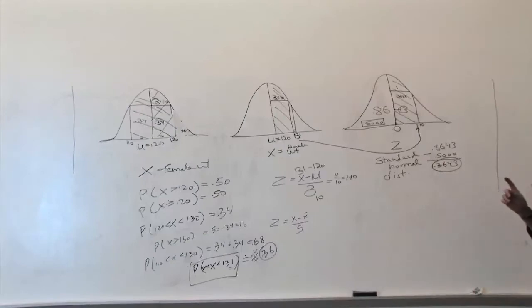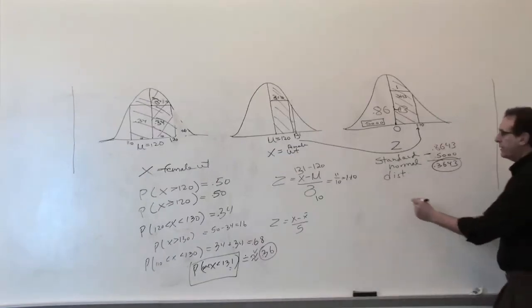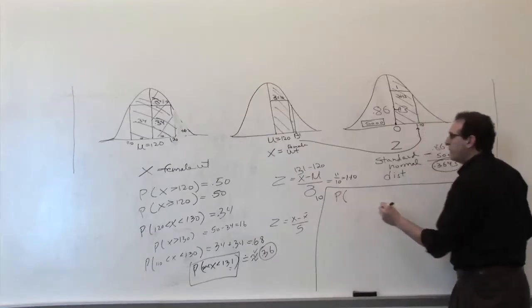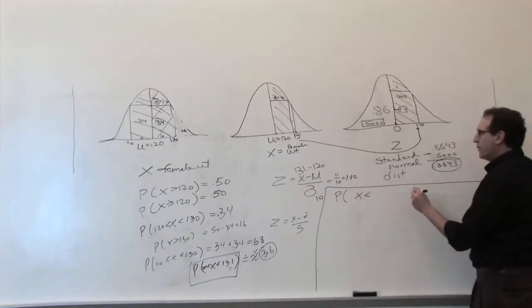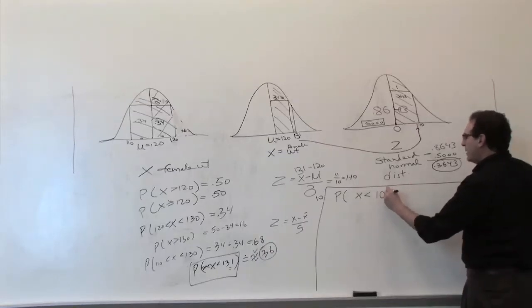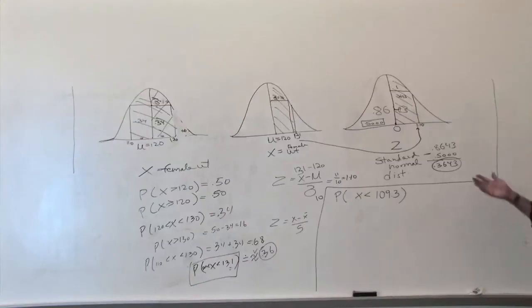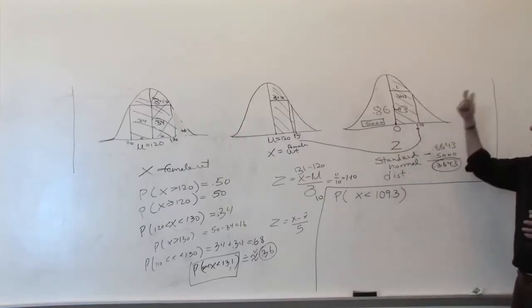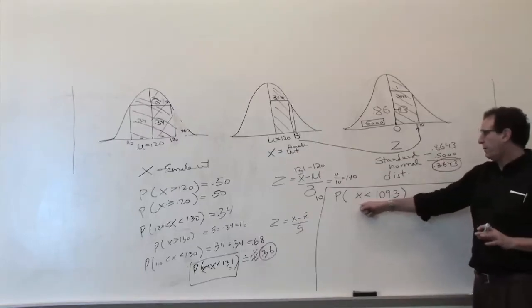Now let's do one other example using this corner of the board to solve a related problem involving a couple of other tricks. How many people weighed less than 109.3 pounds? Given that we're dealing with a bell-shaped curve, with an average of 120 and sigma of 10 — notice there's no sample size here, we're dealing with the whole population — how many randomly weigh less than 109.3?